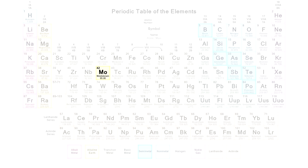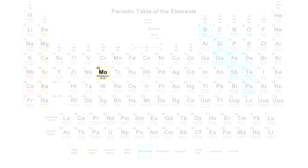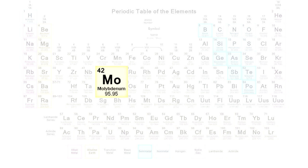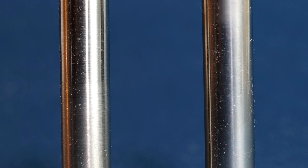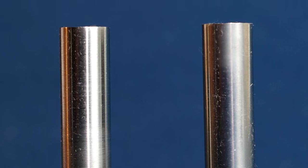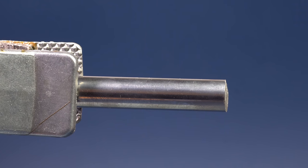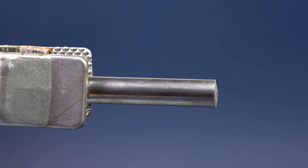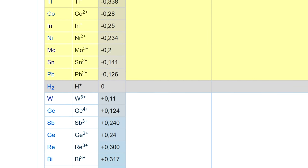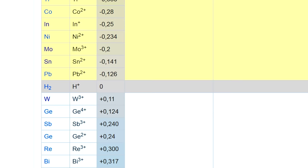In the periodic table of chemical elements, molybdenum belongs to the sixth group and is located above tungsten. Because of having a smaller atomic radius, molybdenum is a bit more active than tungsten and has a lower electrochemical potential.